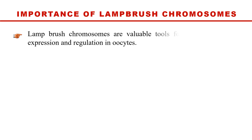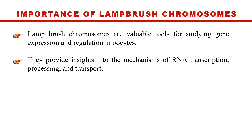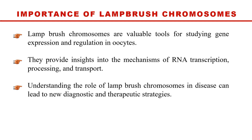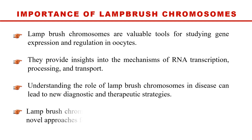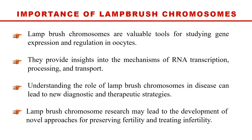The importance of lampbrush chromosomes: they are very important for studying gene expression and regulation in oocytes. They provide insight into the mechanisms of RNA transcription, processing, and transport, since their loops are active sites of RNA transcription. They can also help us understand their role in disease, leading to new diagnostic and therapeutic strategies. Finally, lampbrush chromosome research may lead to new approaches for preserving fertility and treating infertility.